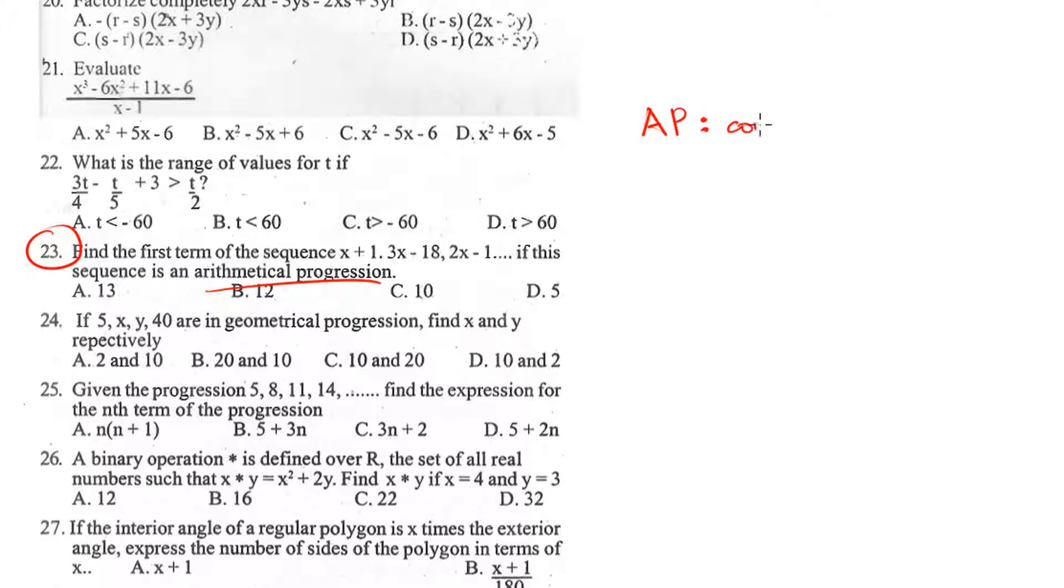For an AP, we have what is called the common difference, which is the difference in value between subsequent entries. In this case, we can say 3x minus 18 minus the initial entry, which is x plus 1, is equal to the third term, 2x minus 1, minus the second term, which is 3x minus 18. This is how we get the common difference, and we can equate them together, open the bracket, solve for x.